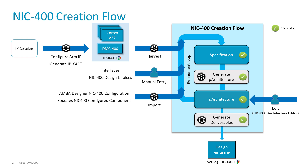The so-called harvest flow allows you to automatically capture interface information from the IP exec description of your system components for which the interconnect is being designed. If you configure your ARM IPs using the Socrates IP catalog, then for each IP you will have the IP exec description as well in your project, so the harvest flow can auto-capture all the interconnect-related interfaces from those files, and can mirror the ones you select onto your NIC400 component boundary, including all the interface attributes that were stored in the IP exec description.